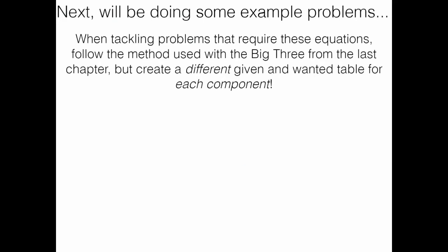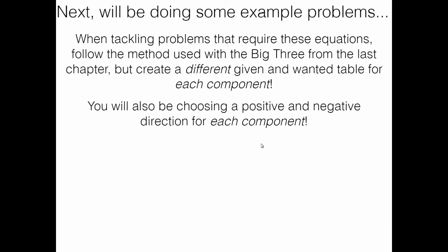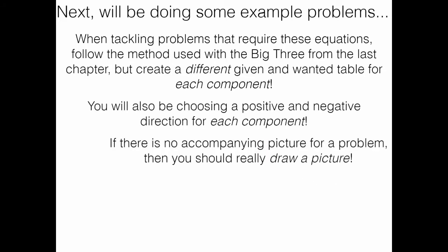We're going to do some example problems for the rest of this lesson, starting with two easy ones. But first, some ground rules: you need to create given-and-wanted tables — two sets, one for the x-direction and one for the y-direction. You need to keep track of all variables. Also, choose a positive and negative direction for both vertical and horizontal motion — is left or right positive? Is up or down positive? You must set both.